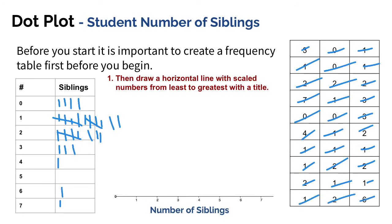Now I've got my totals, so I'm going to fill in the numbers over here to the side. I had four with zero siblings, twelve with one, eight with two, three for three, one for four, zero for five, one for six, and one for seven.